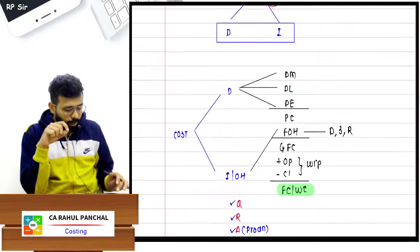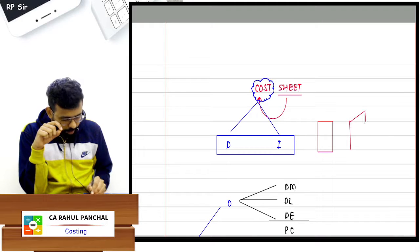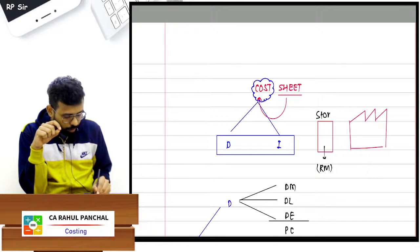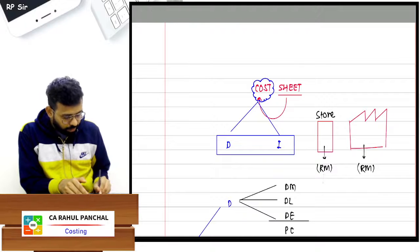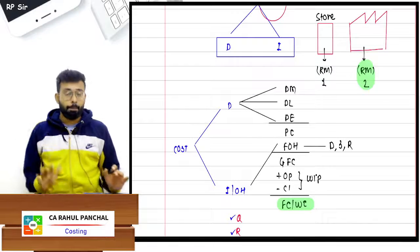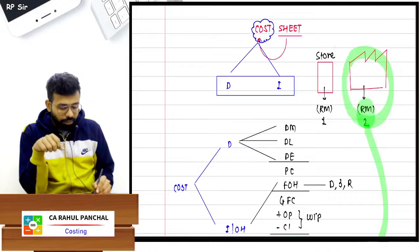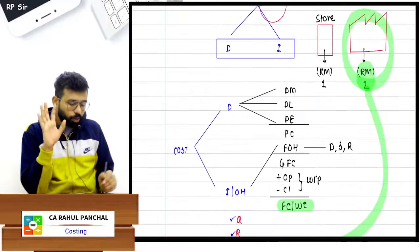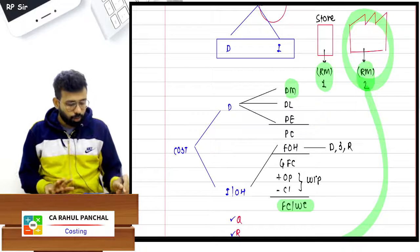Then less sale of scrap. There are two types of scrap: one which is generated when the raw material was in the godown, and one which is generated in the factory during production activity. Scrap generated during production activity should be subtracted from QRAP, because we have incurred material, labour, and overheads on it. But if it is only raw material scrap generated in store or godown, it should be subtracted from raw material consumed.